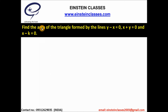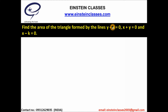In this problem we have to find the area of the triangle formed by the lines y minus x equal to 0, x plus y equal to 0, and x minus k equal to 0. These two lines are perpendicular to each other — y minus x equal to 0 has slope equal to 1, and x plus y equal to 0 has slope equal to minus 1.